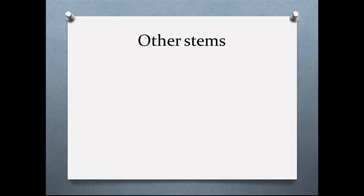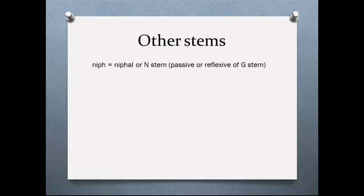There are, however, many other stems. Let me go through them first and then come back to what they look like. You don't have to know what they look like, because there are so many tools available that you can look it up. Just to give you a feel: there is the Nifal, or N stem. It tends to make whatever the G stem is — the Qal stem — passive.